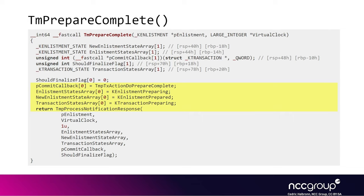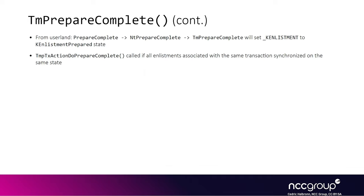We confirmed that in the WinDbg debugger during a previous lab. Looking at the kernel implementation of TmpPrepareComplete — called when PrepareComplete is invoked on the enlistment — the arguments are set up to call TmpProcessNotificationResponse. In this case, the callback is TmpTxActionDoPrepareComplete, where 'tx' stands for transaction. It basically says: if all enlistment states are in the preparing state, flip them all to the prepared state afterwards.